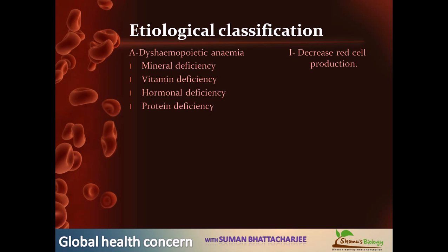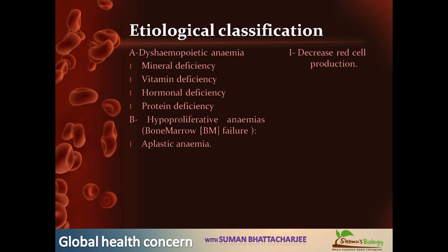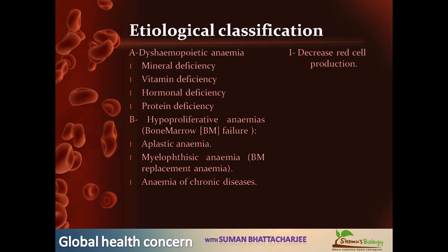The second type is hypoproliferative anemia, which is called the disease of bone marrow failure. It is caused by aplastic anemia, myelophthisic anemia — which is simply bone marrow replacement anemia — and anemia of chronic diseases such as thalassemia or sickle cell anemia.